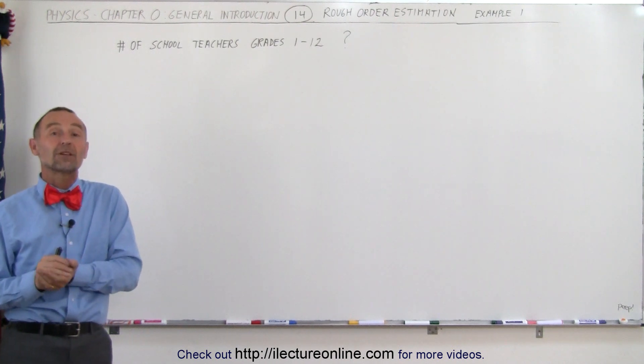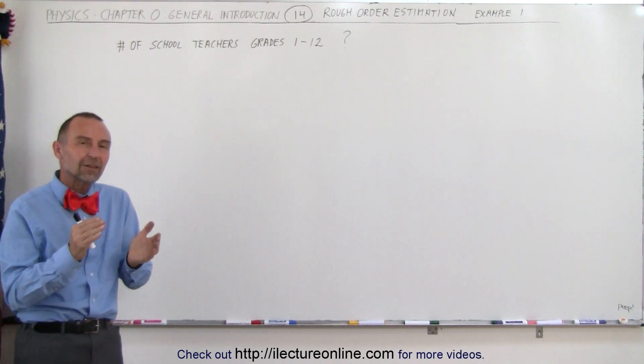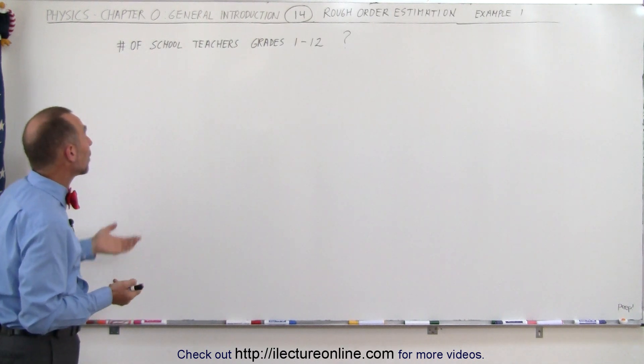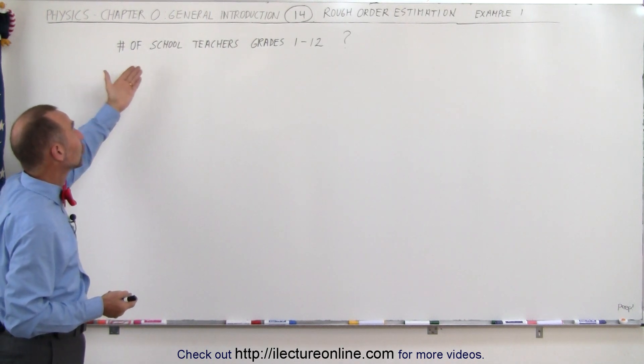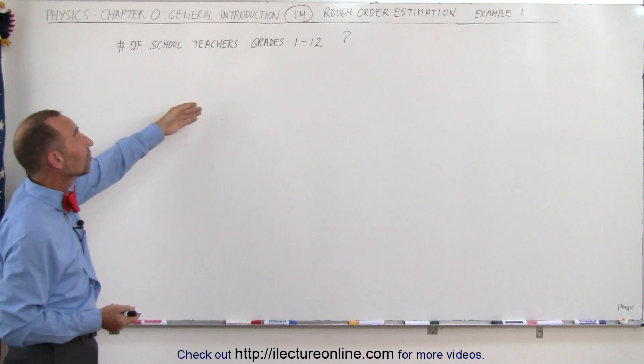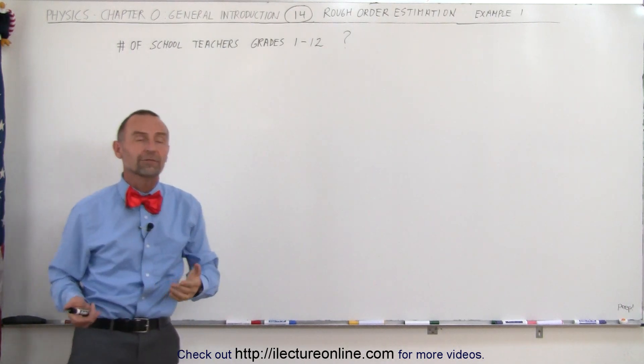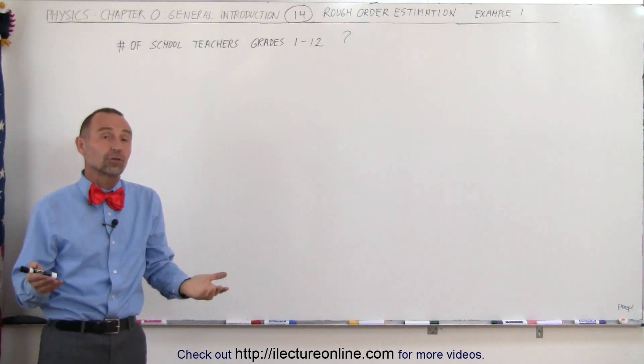And so that's what rough order estimation is all about, finding a number that is somewhere in the ballpark. For example, let's say we want to estimate the number of school teachers in the United States for grades one through twelve. Well, you just need to make a few assumptions.